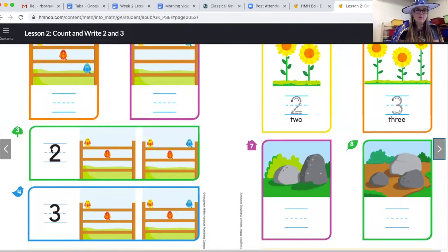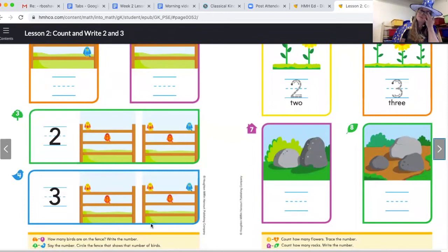Here we have the number. Say it out loud. Good. Number two. And you're going to count the birds on the fence and you're going to circle whichever fence has the correct number of birds. So first, here's the number two, like you said, and trace it. And then which fence has two? And you're going to circle that. Go ahead and do that now. Then you're going to come to this one and you're going to trace this number. What number is that? Yes. Good job. And then you're going to count the number of birds on the fence and you're going to circle the correct picture. You can pause it while you do this.